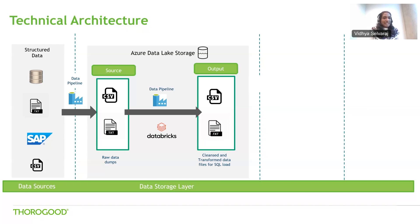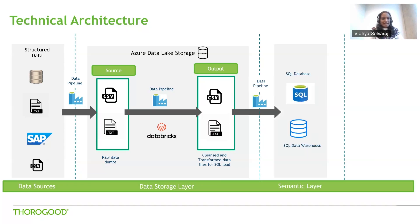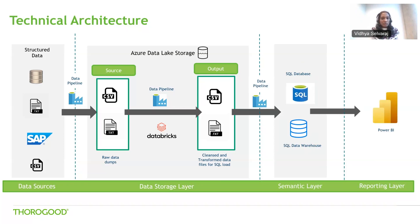The advantage of having source and output data in data lake storage is to have a go-to data platform where you can tap into any processed data set and even perform data science analysis if you intend to. We have additional data pipelines that move data from the storage layer into the semantic layer. The semantic layer used is a SQL data warehouse due to the large volumes of data, though you could also use a SQL database if required. Finally, data is picked up from the SQL data warehouse and Power BI is deployed to report the data in the form of front-end dashboards.